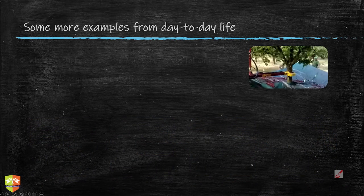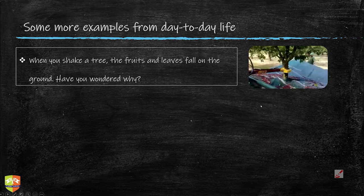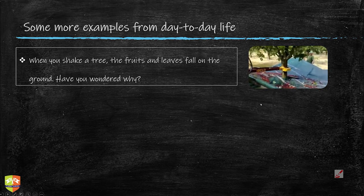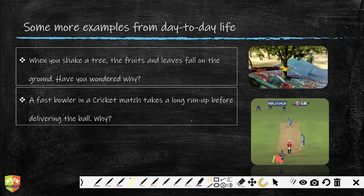Now let's look at some more examples from day-to-day life. Whenever you shake a tree, fruits and leaves fall — let me show you a video where a machine is shaking a tree and berries are being collected. Also, a fast bowler in a cricket match takes a long run-up — why? Because he uses his inertia.